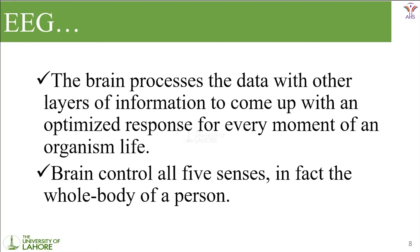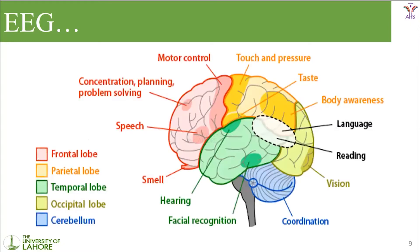Whether a person is living a healthy life or an abnormal life, every moment of life is controlled by the brain. There is not a single moment which hasn't been controlled by that person's brain. The brain controls our five senses and in fact the whole body of a person. These are the different parts which control different areas of our personality traits.